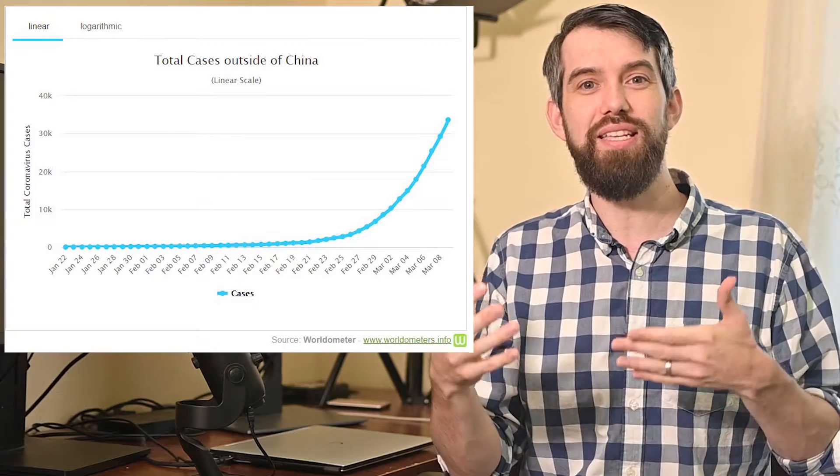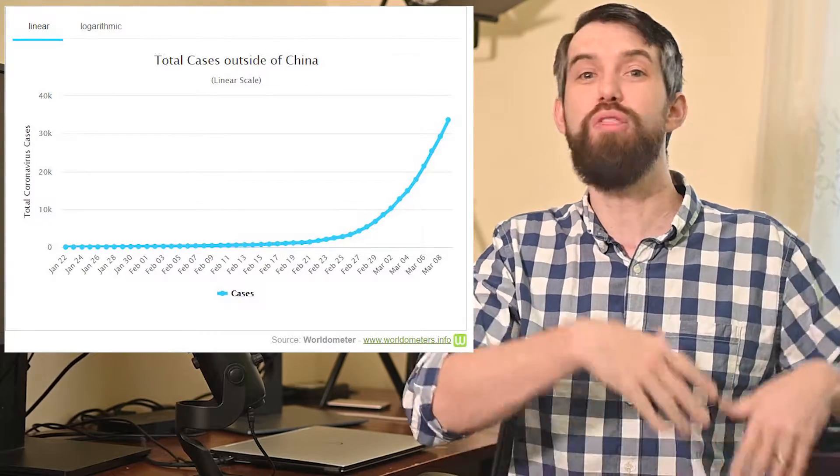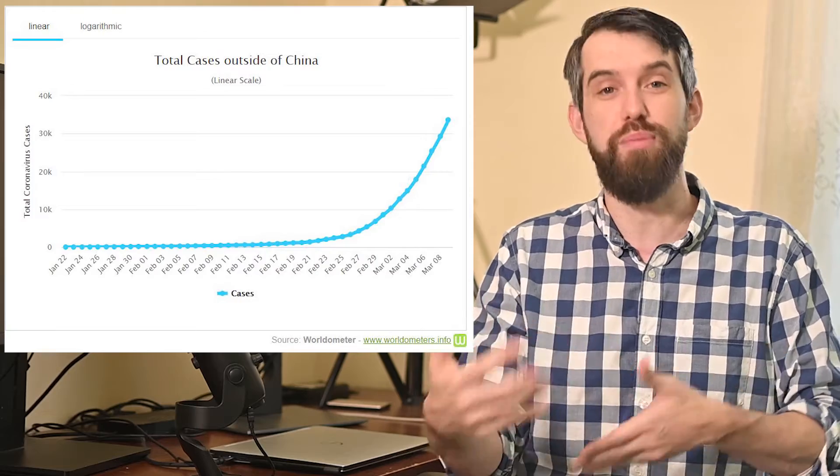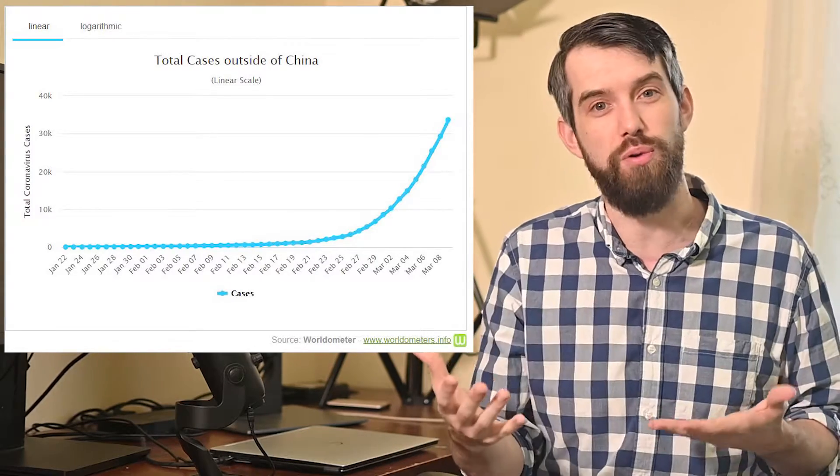But why exactly is it exponential growth and not just some other type of growth that gets larger as time goes on, like for example, quadratic growth or cubic growth?